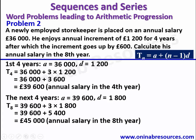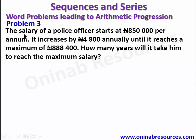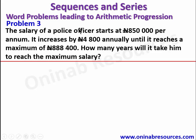And that is the end of Solution to Problem 2. We go ahead to Problem 3. The salary of a police officer starts at 850,000 per annum. It increases by 4,800 annually until it reaches a maximum of 888,400. How many years will it take him to reach the maximum salary? So our A = 850,000 and the common difference D = 4,800, and Tn = 888,400.